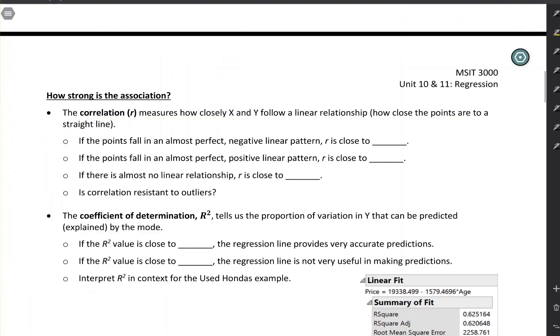Hopefully you saw with the applet that if the points fall in an almost perfect negative linear pattern, then your correlation is going to be close to negative 1. An almost perfect positive pattern, your correlation will be close to 1. And if there's almost no linear relationship, the correlation is going to be close to 0. Notice that we're saying linear relationship. It is actually possible to have a strong relationship, maybe one that looks like this with a big curve in it.